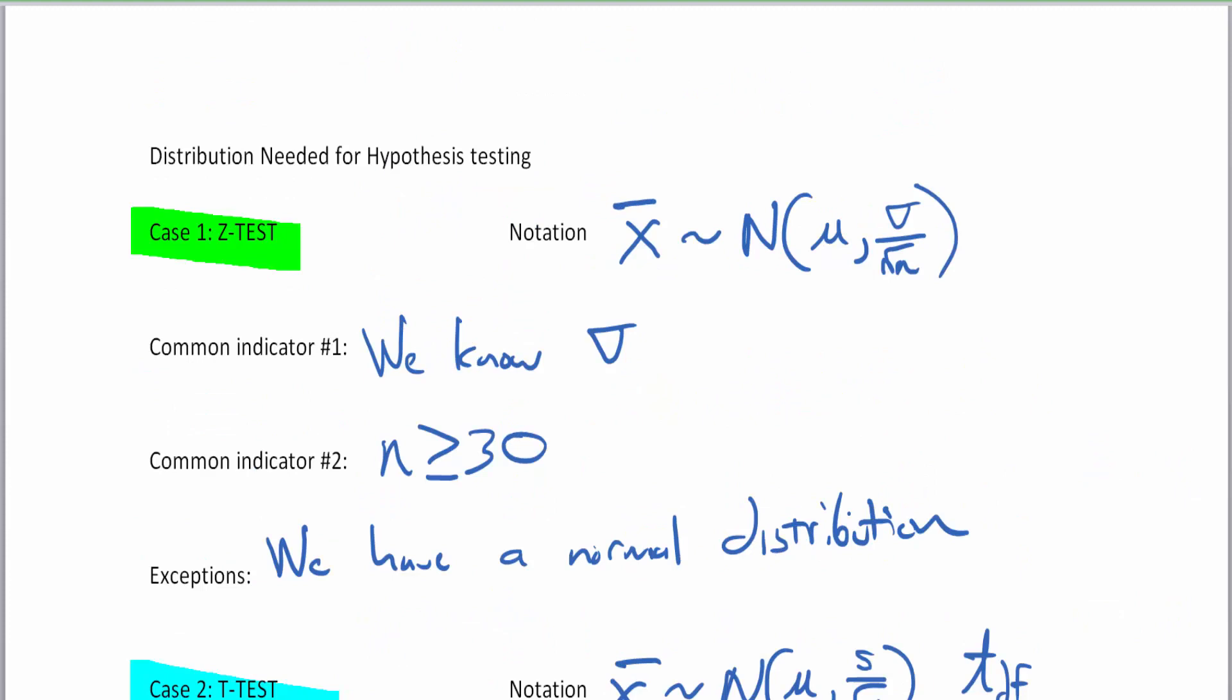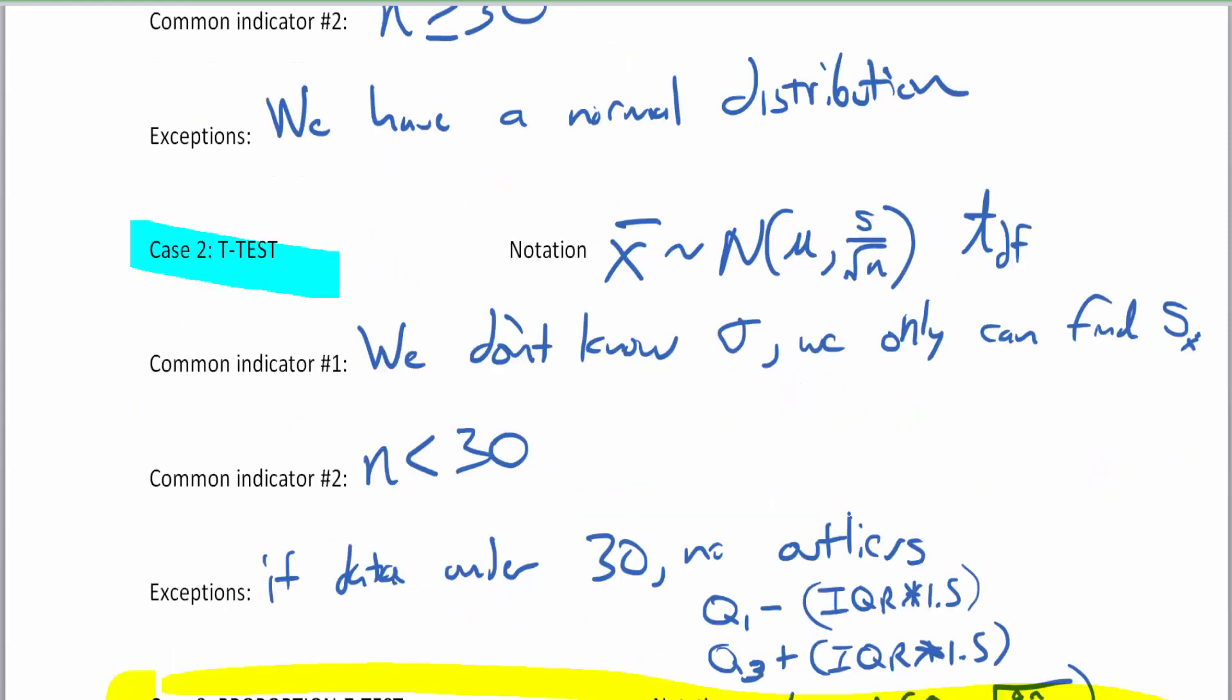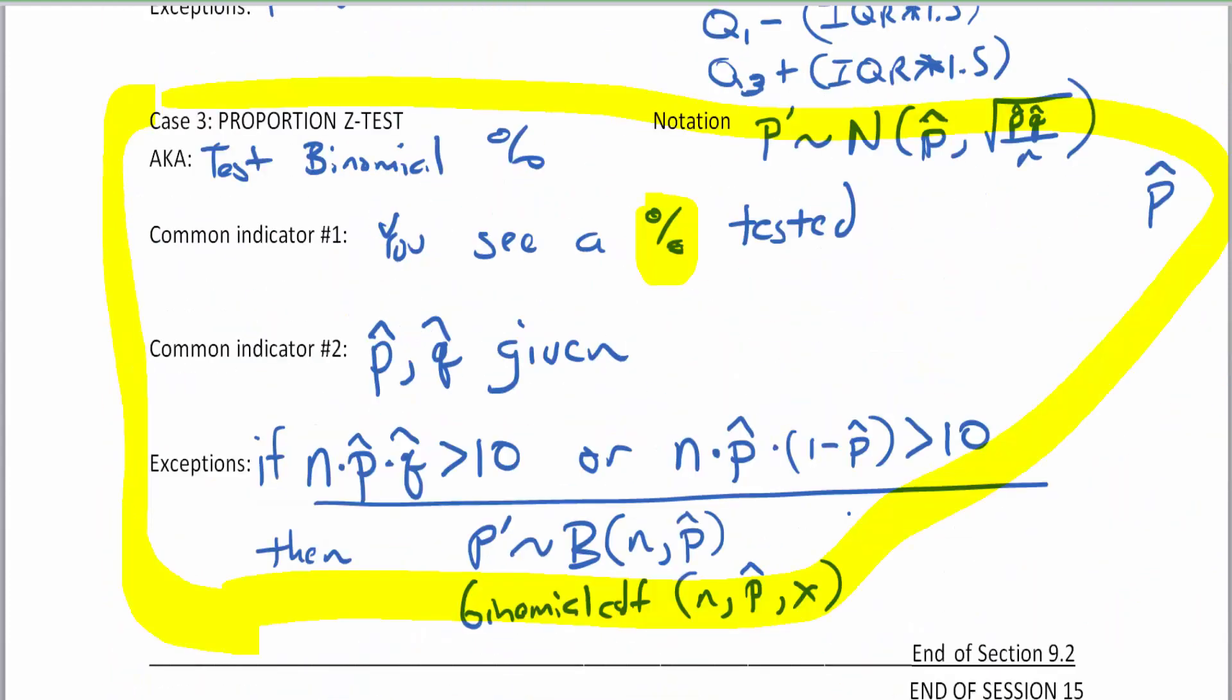So again, large sample size, z-test. Small sample size, and we don't know our standard deviation, t-test. Now if we want to test a percentage, now we have the proportion z-test, and I'm excited the next time we meet and talk about this, we're going to get into actual hypothesis testing examples. So stay tuned to the next series of videos. I appreciate you sticking around for this informational portion of this lecture to just tell you what are we going to see next. Thanks again for watching.